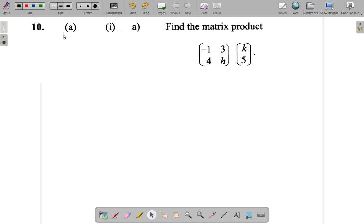Question 10. Find the product. There are two matrices: negative 1, 3, 4, H and K, 5. Alright, let me rewrite these matrices.